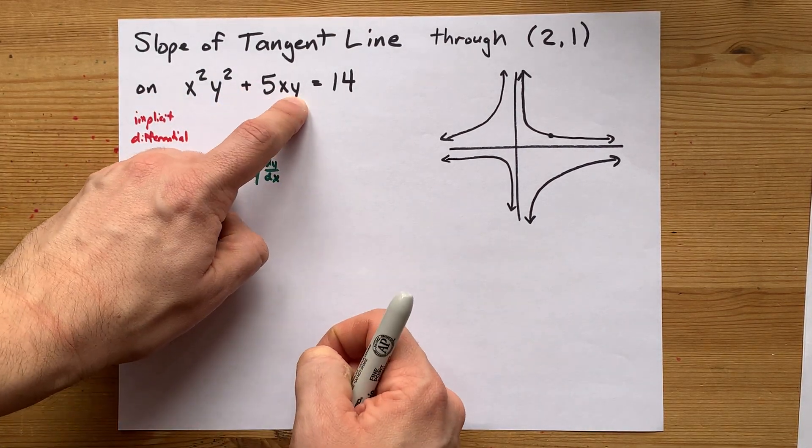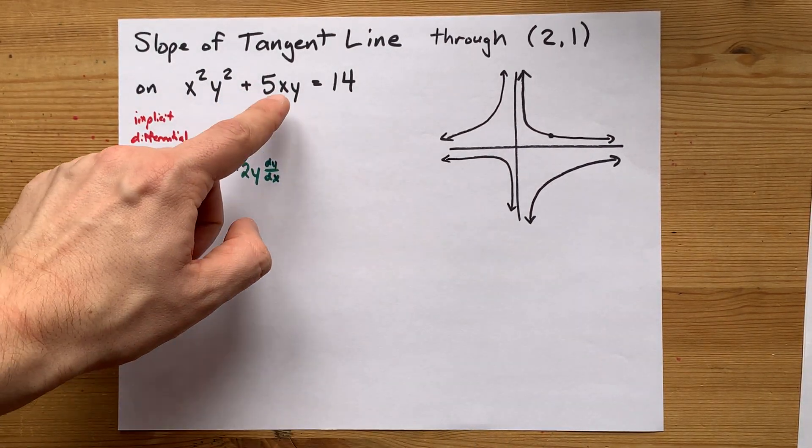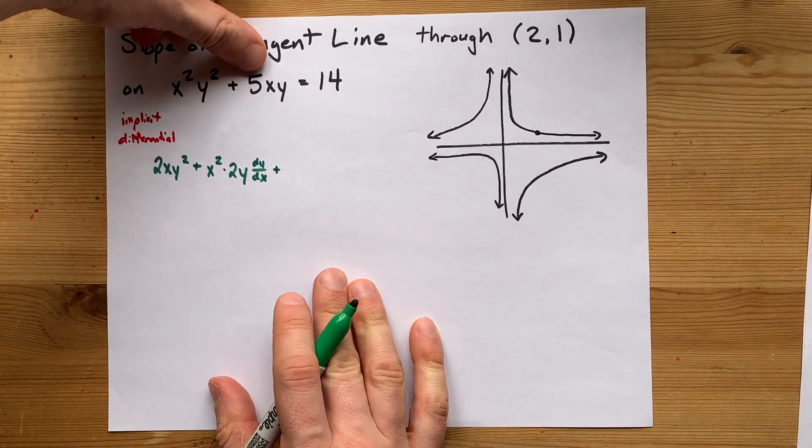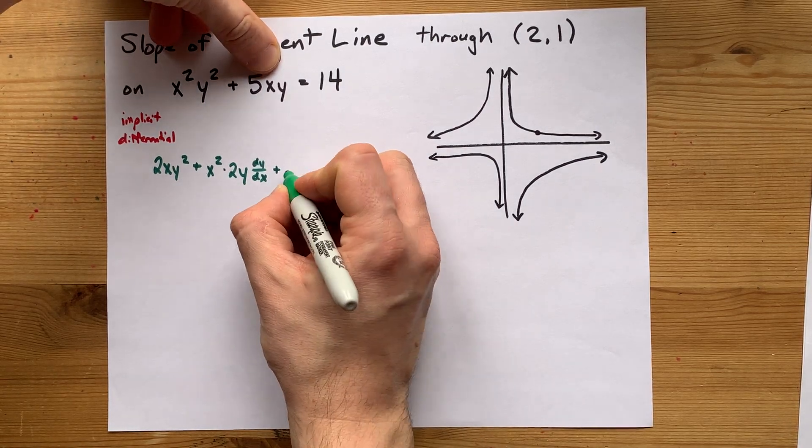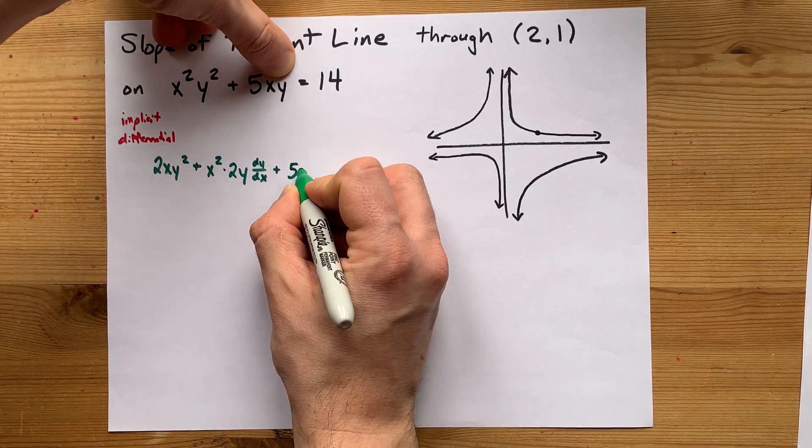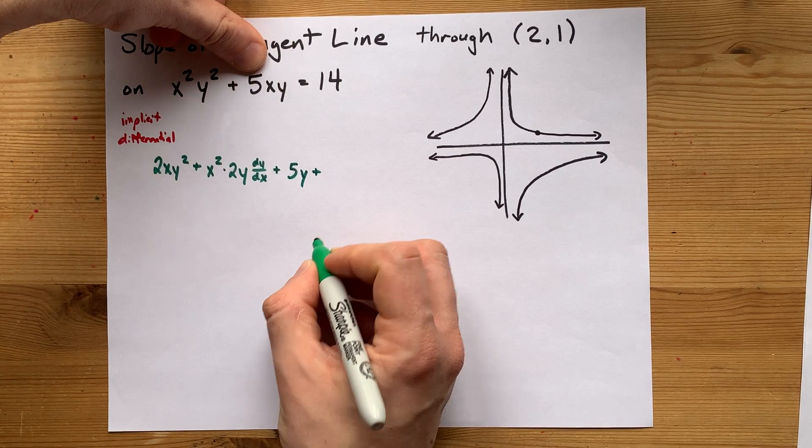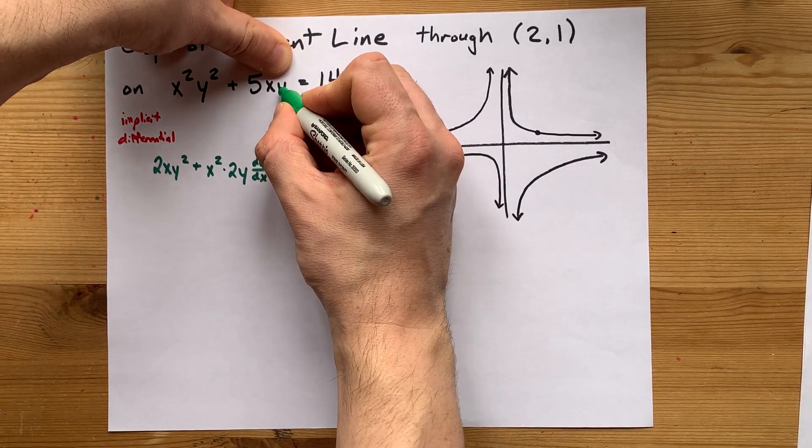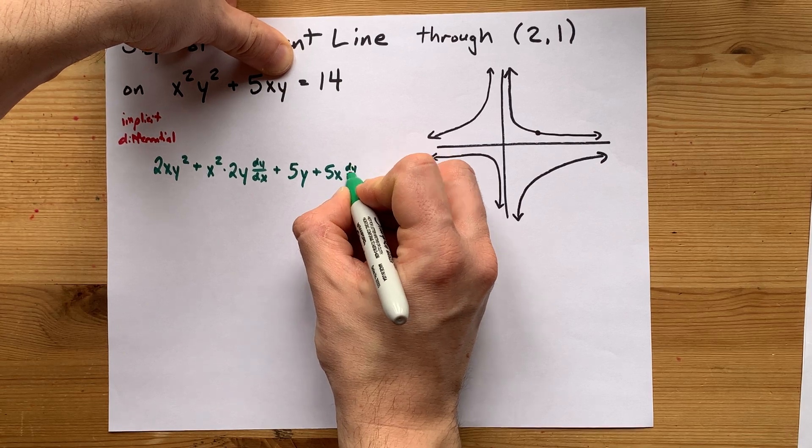Now 5xy is also a product. You have the x and it's being multiplied by the y. So, derivative of the first thing, 5x, times the second thing as is. Now the first thing as is times derivative of the second thing. The derivative of y is dy by dx.